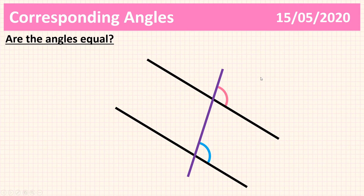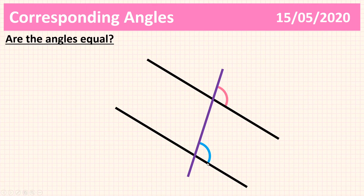Let's try another diagram. The lines look parallel, but there's no notation to tell us that they are parallel. We cannot assume the lines are parallel unless we are given the notation to say so. So for this diagram, the lines aren't parallel, these two angles are not corresponding, and we cannot be sure if they are equal. We might measure them and find they are equal, but that's not because of the angle fact — the angle fact only applies to parallel lines.